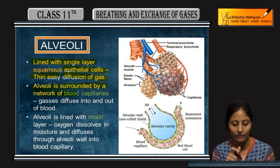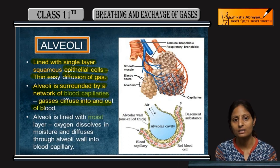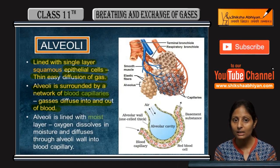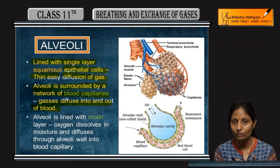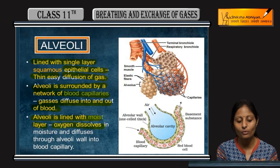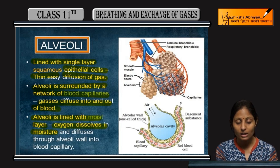If we look at the structure of the alveoli, it is surrounded by a network of blood capillaries. Blood flowing through these capillaries can be oxygenated or deoxygenated. Gases are exchanged through a simple diffusion process into and out of the blood via this capillary network.